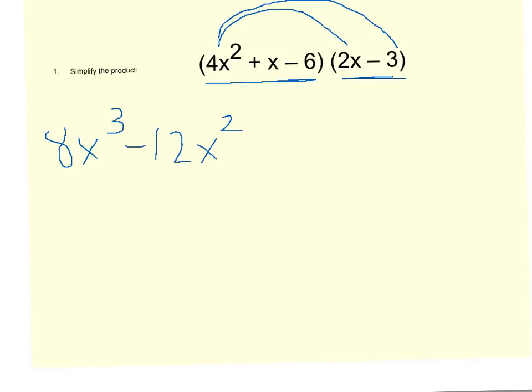Now I'll take my positive x, my second term, and multiply it with everything in the binomial. So I'll have a plus 2x² and a negative 3x. And then to finish off, that negative 6 has to multiply with the 2x and with the -3. So that will give me a -12x plus 18.